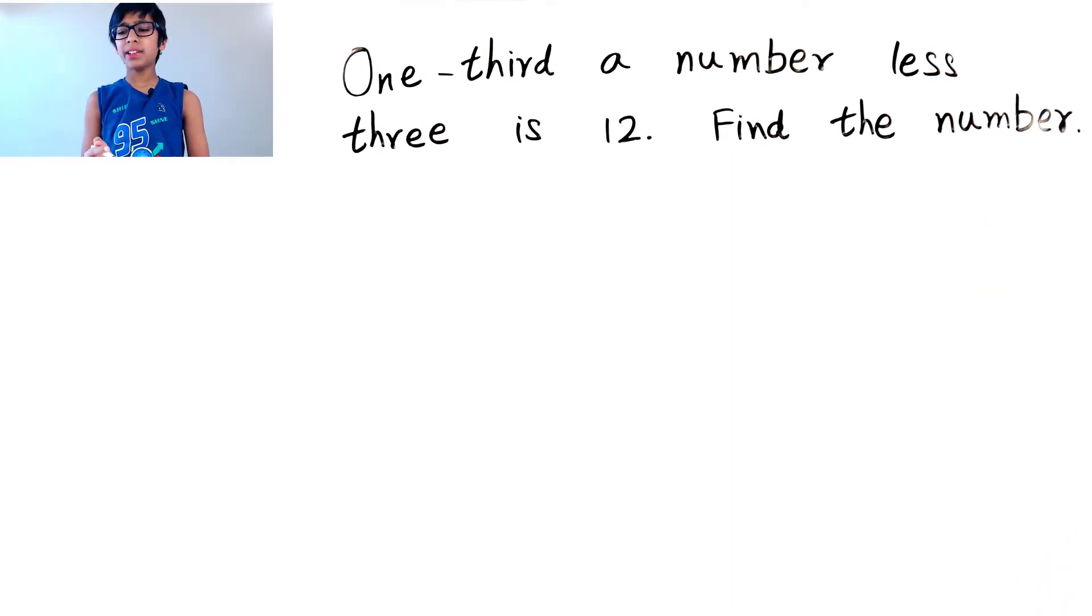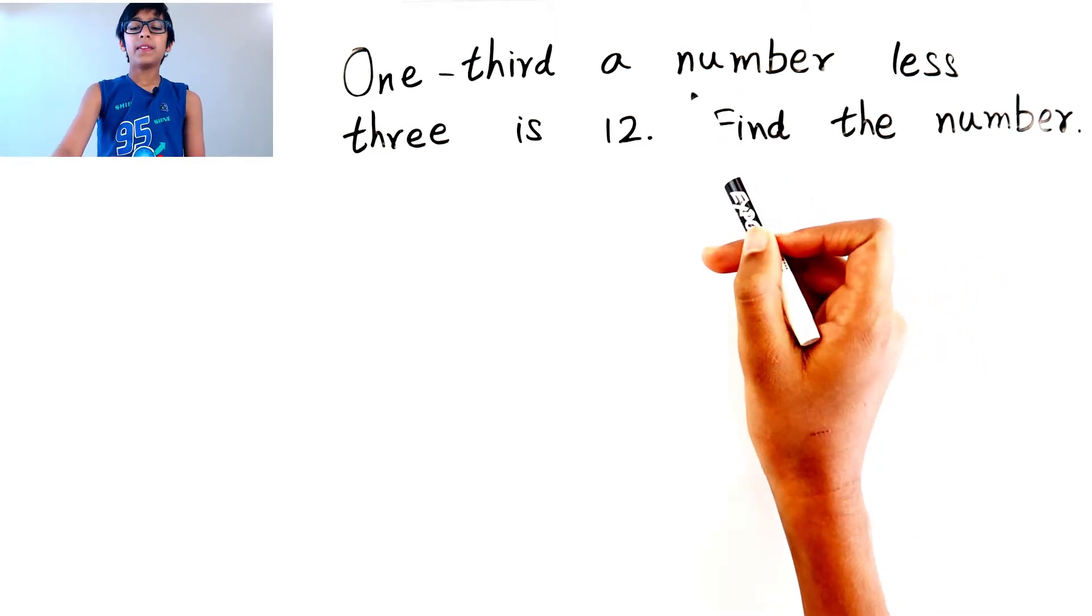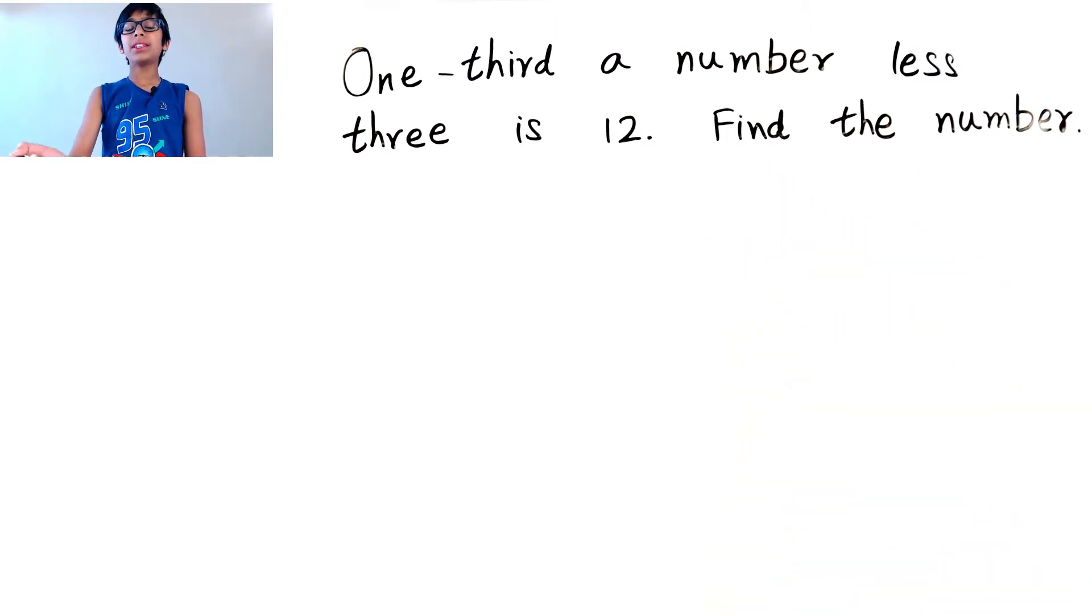Okay, so one-third a number less 3 is 12. So for a number, let's take it as n.